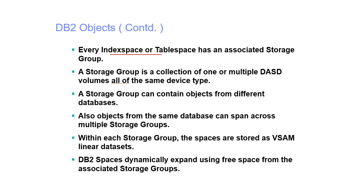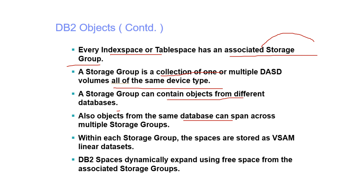Every index space or table space has an associated storage group. A storage group is a collection of one or more DASD volumes, all of the same device type. A storage group can contain objects from different databases, and objects from the same database can span across multiple storage groups. Within each storage group, spaces are stored as VSAM linear datasets, and DB2 spaces dynamically expand using free space from the associated storage group.